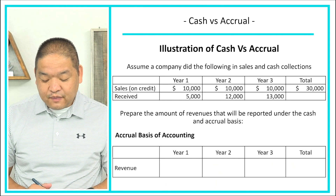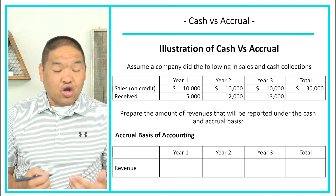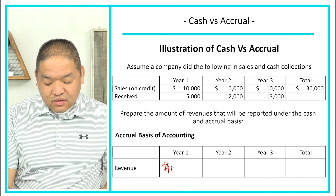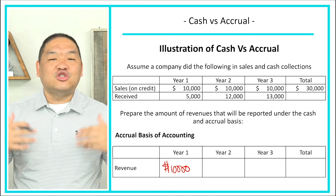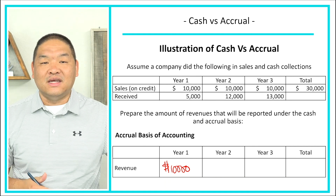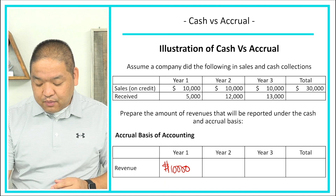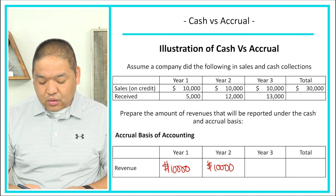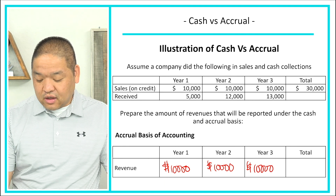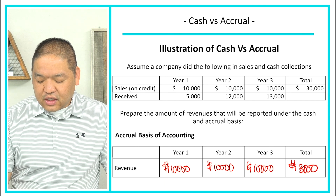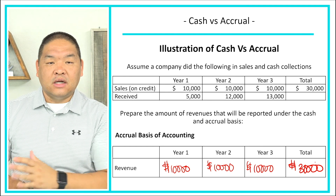Under accrual basis, we don't care about when we receive cash — only when we've earned the revenue. In Year 1, we earned $10,000 in revenue, so we book $10,000 even though only $5,000 was collected. In Year 2, we earned $10,000, so we book $10,000. In Year 3, same — $10,000. Total is also $30,000, but the per-period amounts differ significantly from the cash basis.